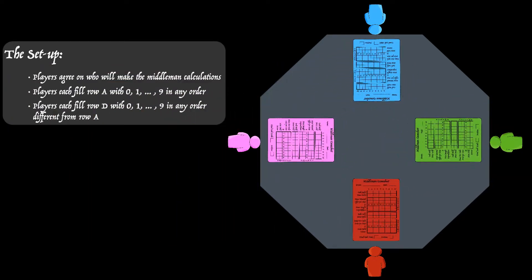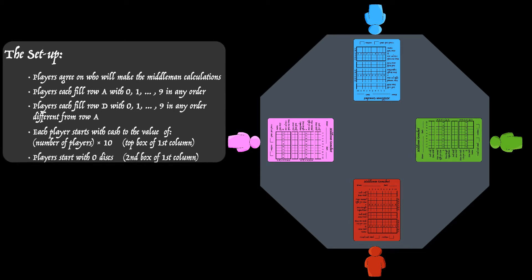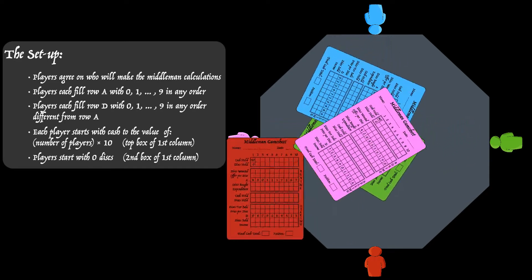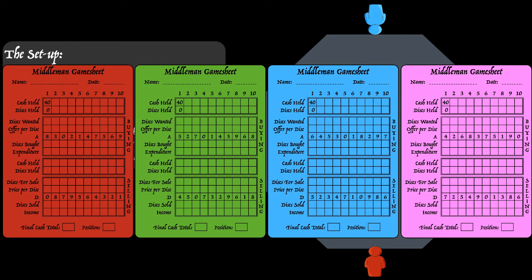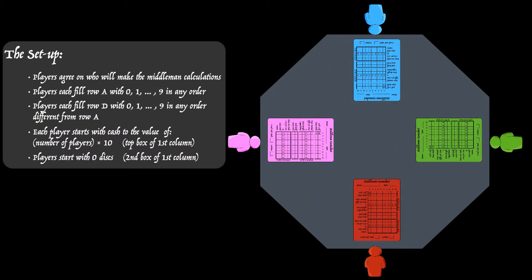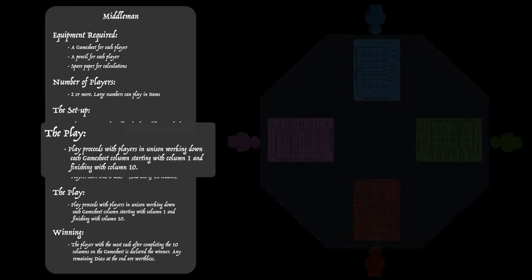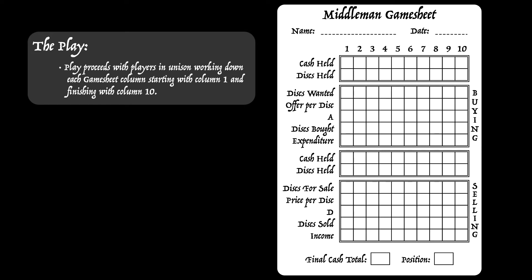Each player starts with ten times the number of players' cache — in this game it's 40; two players would be 20, etc. Players start with no disks in their stock. All players put their cache held — in my case 40 — and disks held zero. We can now enter the buying round. A complete game consists of ten buying and selling cycles, and these ten cycles correspond to the columns one to ten on the game sheet. Players together work down these columns in order.